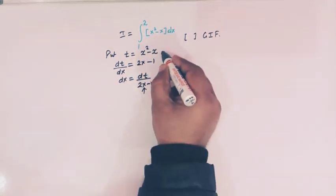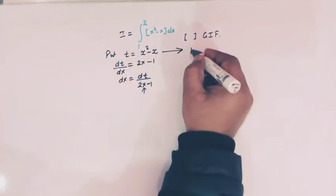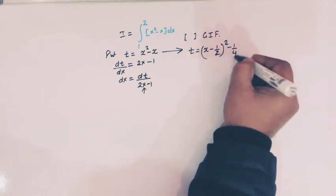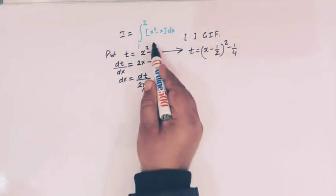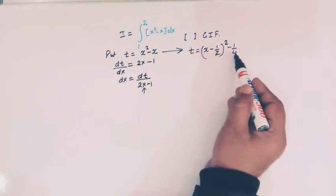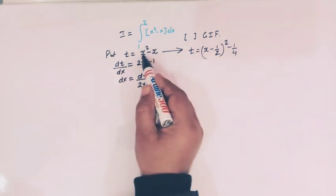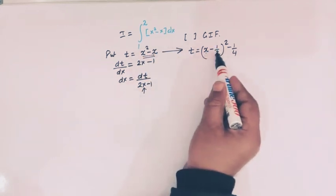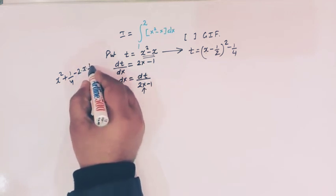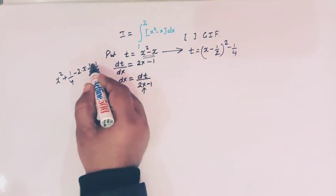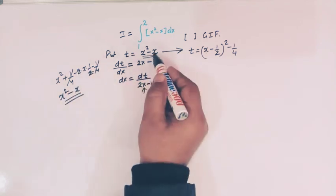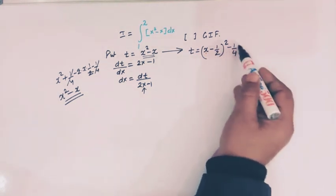We now try to express x in terms of t. From the relation, t equals x minus one-half, whole squared, minus one-quarter, because by completing the square, x squared minus x can be written as (x minus one-half) squared minus one-quarter. Simplifying confirms this expression. So t equals (x minus 1/2)² minus 1/4.